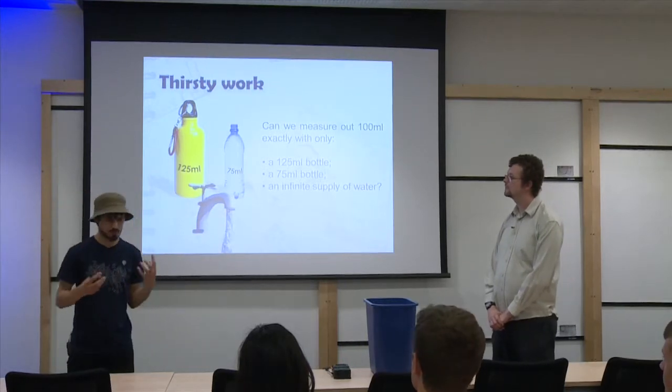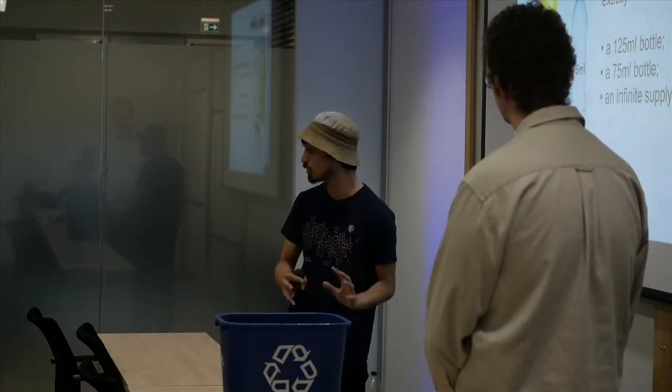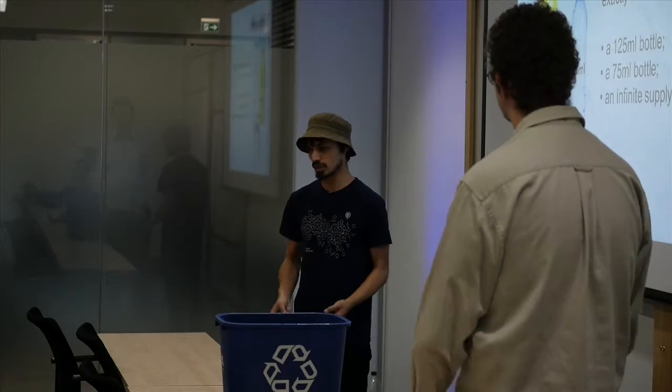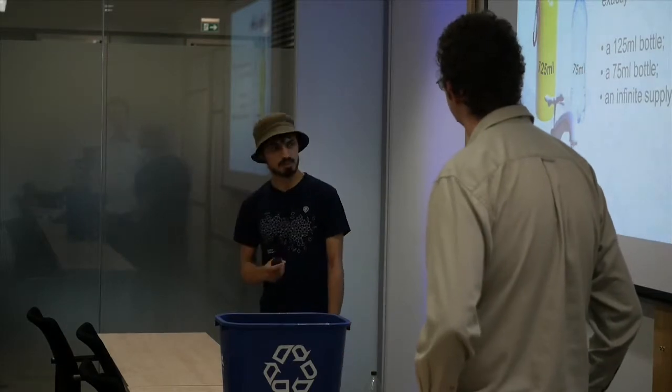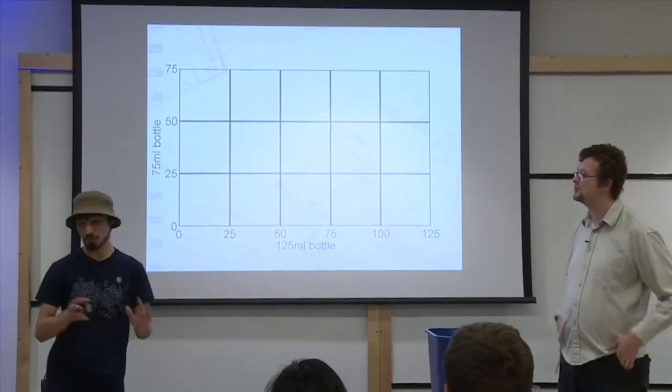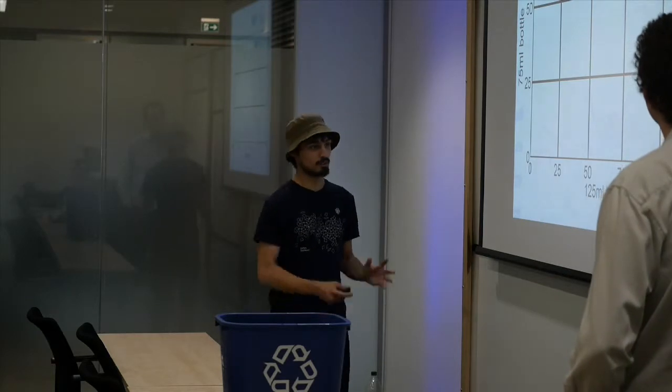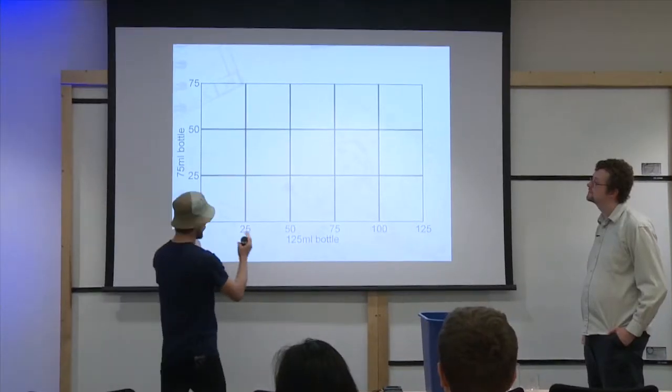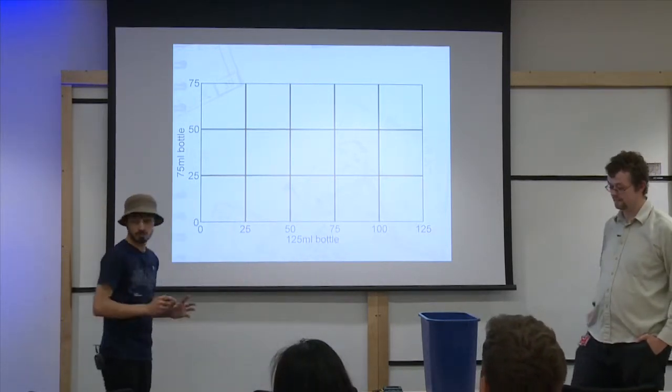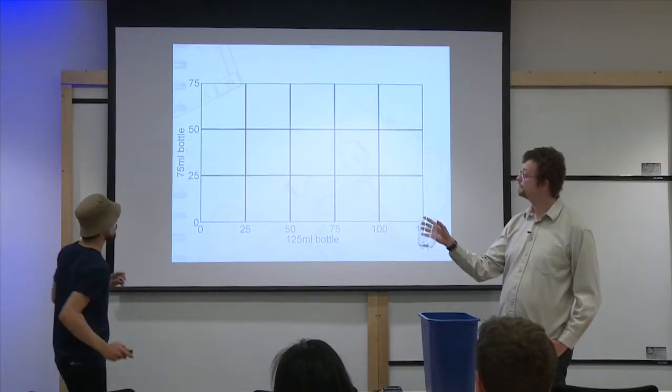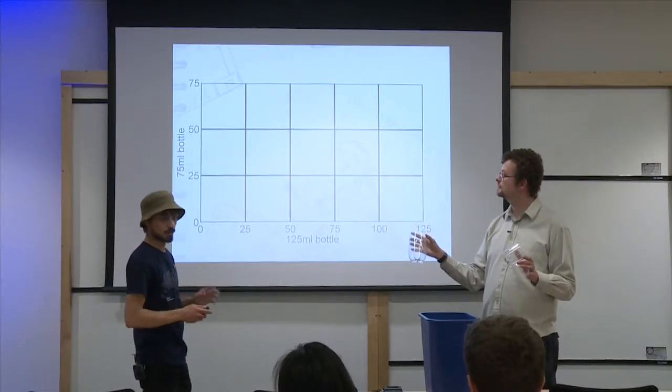What we did is we're mathematicians, and we hate just pottering about, just trying stuff. It's called trial and error. We hate it, mainly because it's a lot of work. We're very lazy as mathematicians. Mathematicians are very, very lazy. We hate doing work. And so we did this. We came up with a graph. It was a very special graph. It's not that special actually, but here's what it is. Along the x-axis, we're plotting how much water is in the large bottle, the 125 milliliter bottle. Up the y-axis, we're plotting how much water is in the 75 milliliter bottle.